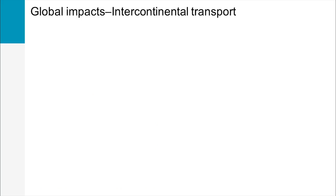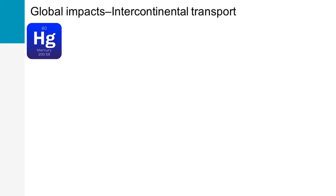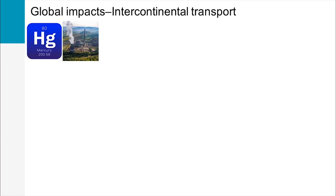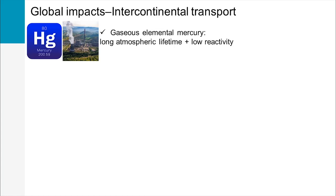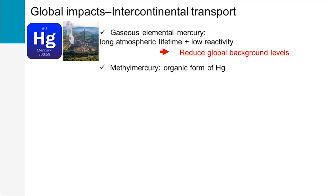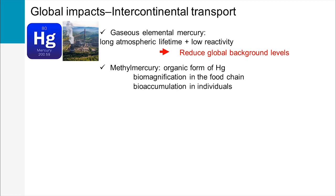The case of persistent pollutants such as atmospheric mercury is also interesting to point out. Mercury is mainly generated by coal-fired power plants, predominantly in the form of gaseous elemental mercury. Due to its low reactivity in the atmosphere, it has a long atmospheric lifetime. Besides, elevated mercury levels have been measured in many remote regions of the world. The remaining challenge is to reduce global background levels. Mercury deposition is a critical issue because it can be transformed by bacteria in anaerobic conditions into methylmercury, which biomagnifies through the food chain and bioaccumulates in individuals.